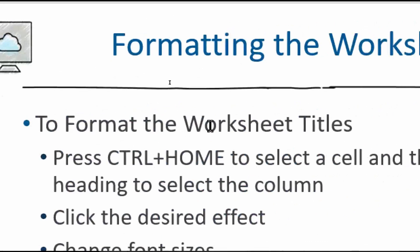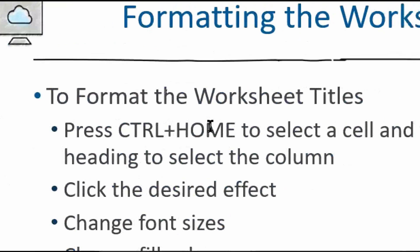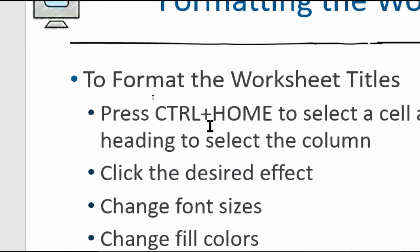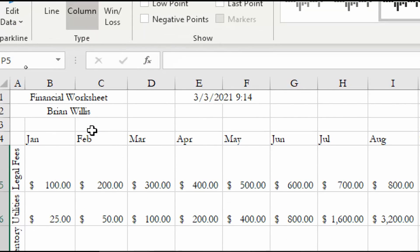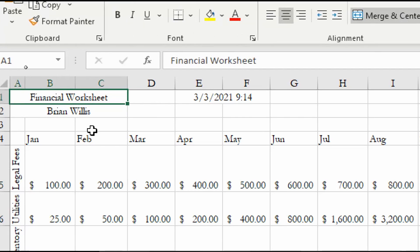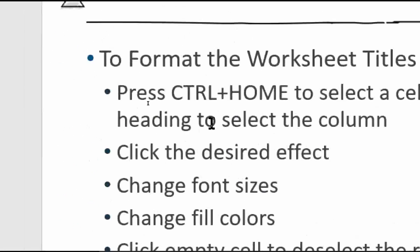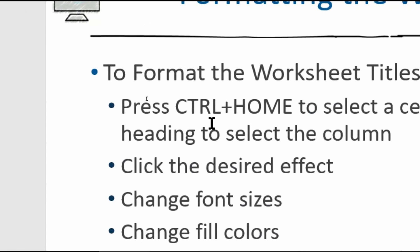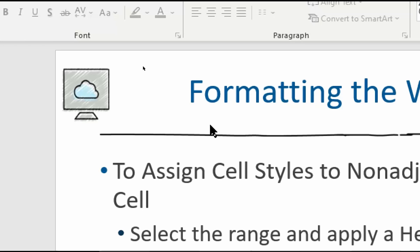For formatting worksheet titles, press Ctrl+Home to return to cell A1. This is all the same formatting you're used to. The Home key is in the group of six keys above your arrow keys on a desktop keyboard; on a laptop it may be on the same row as your F1 through F12 function keys — its location varies by design.